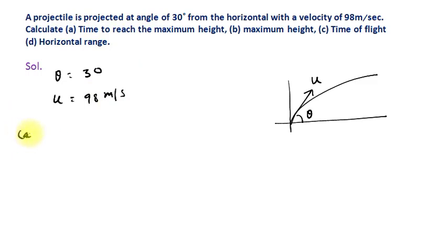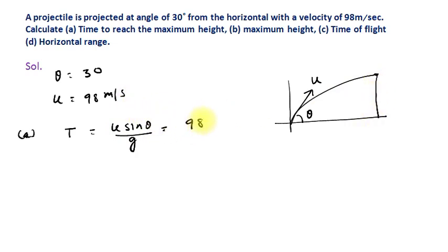First part: time to reach maximum height. The formula is t = U·sin θ / g. We put the values: 98 × sin 30° / 9.8. Sin 30° = 1/2, so 98 × (1/2) = 49, divided by 9.8. The 9.8 cancels out to give 5 seconds. So the time to reach maximum height is 5 seconds. We used the direct formula here.